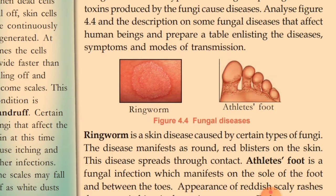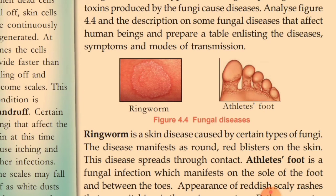The first disease is known as ringworm. Ringworm is a skin disease caused by certain types of fungi. The disease manifests as round red blisters on the skin. The symptom of ringworm disease is formation of round red blisters on the skin. The disease is mainly spread through contact — person to person contact.